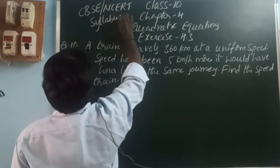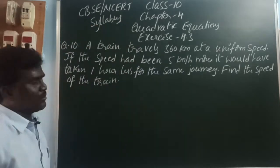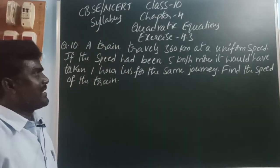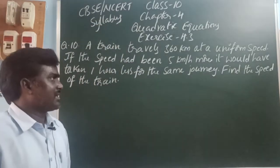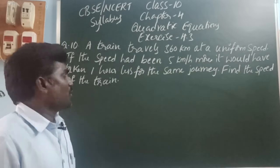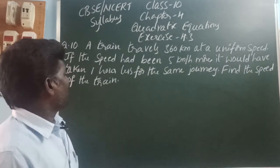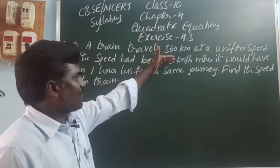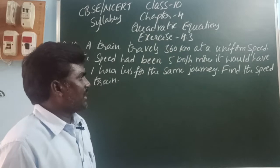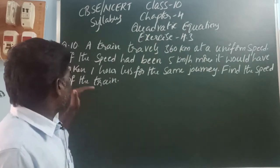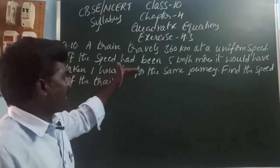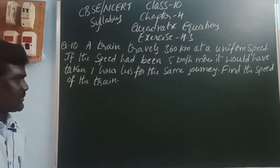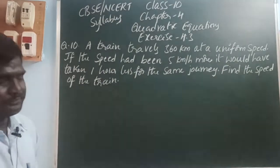Question number 10. A train travels 360 km at a uniform speed. If the speed had been 5 km per hour more, it would have taken 1 hour less for the same journey. Find the speed of the train.